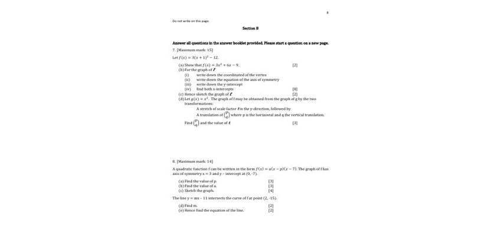Let us discuss the answer to number 7. The function given is 3 times the quantity x plus 1 squared minus 12. We have to show that that function is equal to 3x² + 6x - 9.